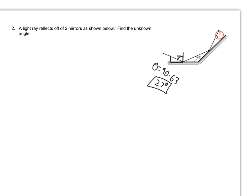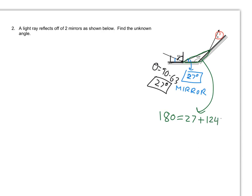The second thing is, if this angle here is 27 degrees, this angle here is also going to be 27 degrees. That comes from the fact that this is a mirror, and the law of reflection tells us that whatever angle light goes in at, it will be reflected at the same angle. From there, I'll think about this triangle to get my next angle. The angles of a triangle must add up to 180, so 180 equals 27 plus 124 plus theta. Solving for theta, we get 29 degrees.